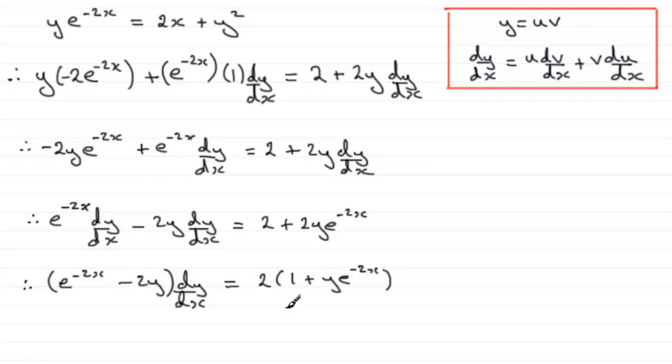So that gives us two lots then of 1 plus y e to the minus 2x, and that is all divided by e to the minus 2x minus 2y. So there's your answer for dy/dx.